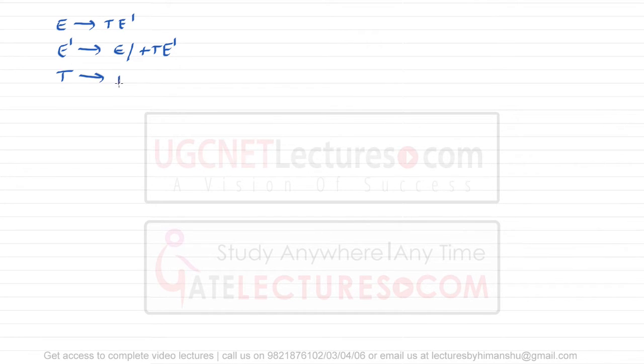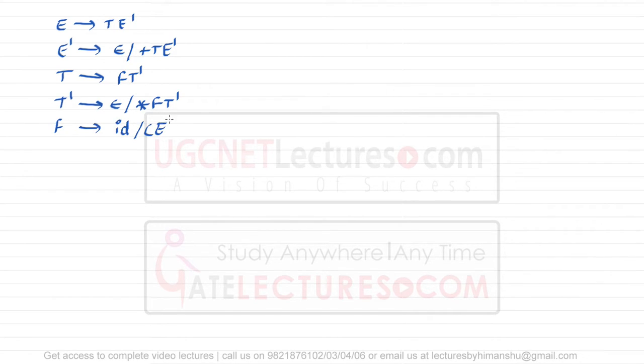The grammar: E can derive T E', E' can derive epsilon or plus T E', T can derive F T', T' can derive epsilon or star F T', and F can derive id or opening bracket E closing bracket. Assume we are having the following grammar, and for this particular grammar we need to find what is the FIRST and FOLLOW.